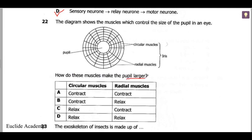The question asks how these muscles make the pupil larger. The pupil gets bigger in dim light — there's not much light in the room, so the pupil enlarges so enough light can come in and pass through the lens so you can focus on images. In bright light, it becomes smaller to control the amount of light passing through.